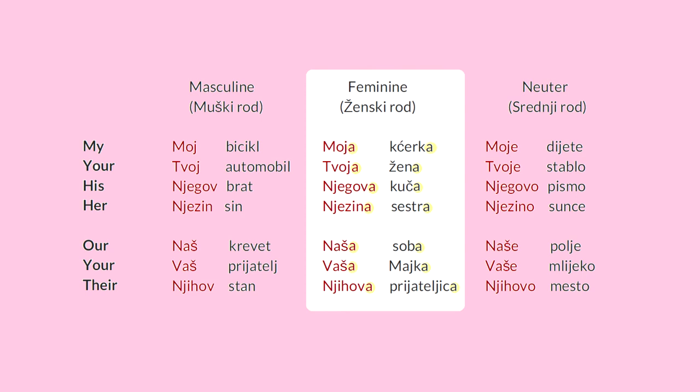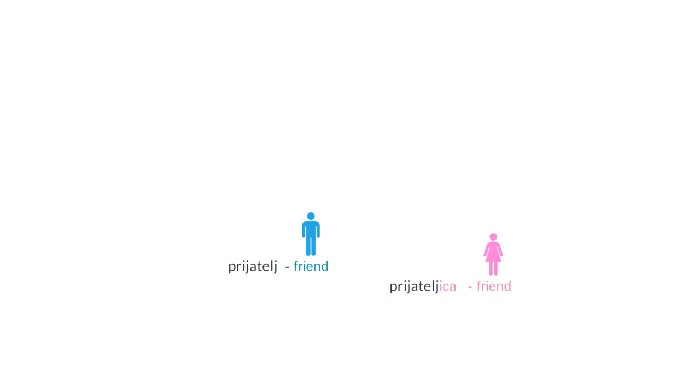Like кчерка — моя кчерка. Твоя жена — my daughter, your wife. Негова куча — his house. Незина сестра — her sister. Наша соба — our room. Ваша майка — your mother. Нихова приятелица — their friend. Like приятел is a friend and приятелица is a female friend.